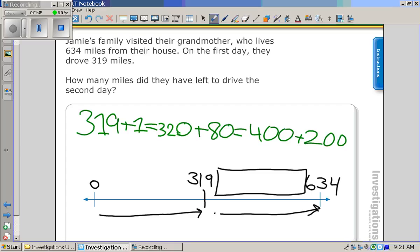And now we're at 600. And how many more do I need to get to 634? 34, so plus 34. And that equals 634. So how much did you add all together?